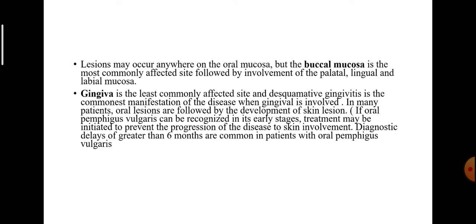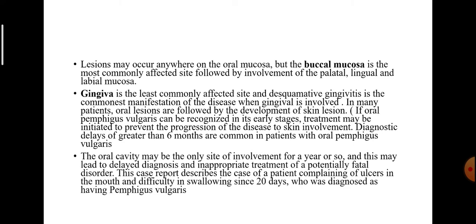Diagnostic delays of greater than 6 months are common in patients with oral Pemphigus vulgaris. If oral Pemphigus vulgaris can be recognized in its early stages, treatment may be initiated to prevent the progression of the disease to skin involvement. The oral cavity may be the only site of involvement for a year or so, and this may lead to delayed diagnosis and inappropriate treatment of a potentially fatal disorder. This describes a patient complaining of ulcers in the mouth and difficulty in swallowing since 20 days, diagnosed as having Pemphigus vulgaris.